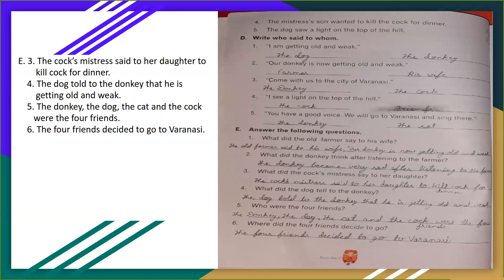Who were the four friends? Chaar dost kaun the? The donkey, the dog, the cat and the cock were the four friends. Ye charo dost the. Sixth, where did the four friends decide to go? The four friends decided to go to Varanasi. Chaar dost kaha jaane ka decide karte hain?